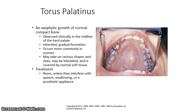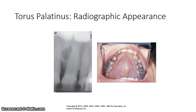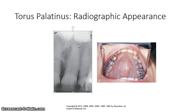No treatment is necessary unless they interfere with speech, swallowing, or a prosthetic appliance such as a denture. This is the radiographic appearance of a lobulated torus palatinus. You can observe it in the picture on the right, and you can also see the lobulated appearance on the radiograph to the left.